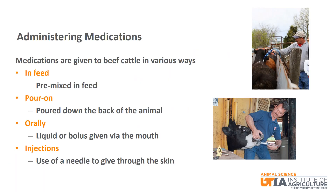Medications are administered to beef cattle in various ways. One way is through feed. These substances would be mixed into the feed ration to form a medicated feed. A couple of examples of this would be dewormers and ionophores like monensin.